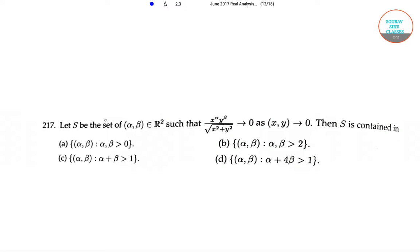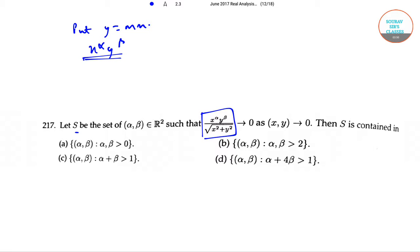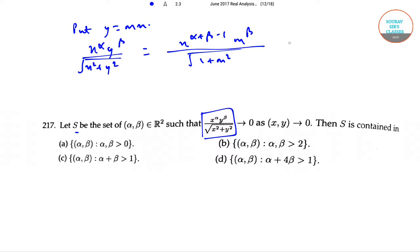The next question is: let S be the set of (alpha, beta) such that x^alpha times y^beta divided by root over x squared plus y squared gives zero as (x, y) tends to zero. Then S is contained in — now put y equal to mx; then we get x^alpha times y^beta over root(x^2 + y^2) equals x^(alpha + beta - 1) times m^beta over root(1 + m^2), which equals zero provided alpha plus beta is greater than 1.